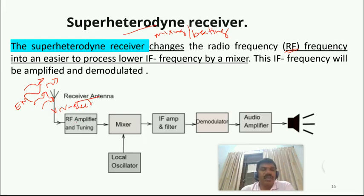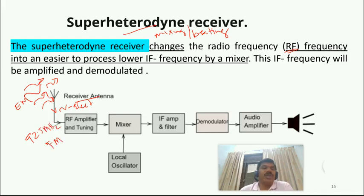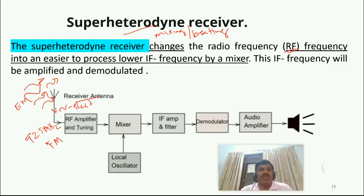The weak signal captured by the antenna is then fed to an RF amplifier — radio frequency amplifier — which amplifies the signal. It also performs tuning. For example, if we are tuning to FM radio at 92.5 MHz, we are selecting that particular frequency. Whether using a mobile, radio, or car audio system, we tune to that particular frequency — that is called frequency selection.